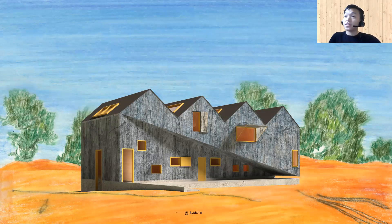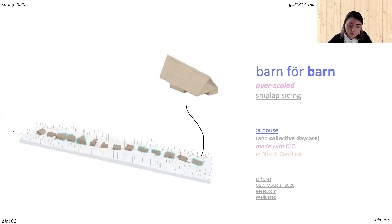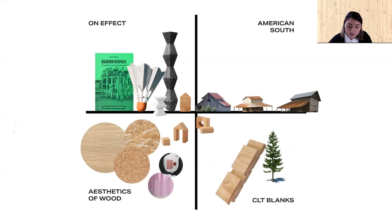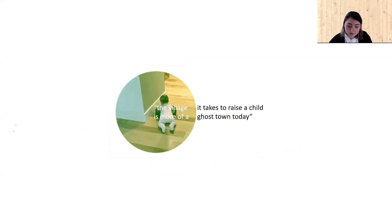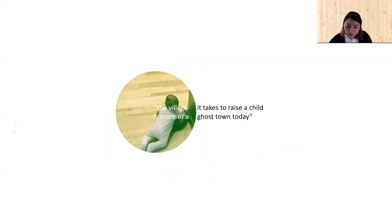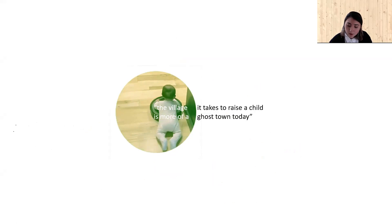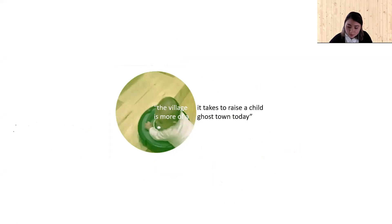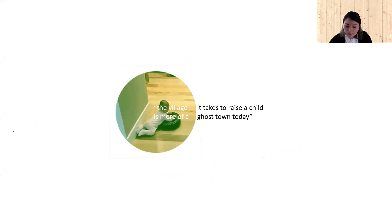Hello everyone, I'm Elif from Istanbul, Turkey, and the title of this project is Barn for Barn. This is an overview of where my interests lie at the intersection of the Scandinavian effect, the American South, aesthetics of wood, and CLT blanks. My journey into this semester began with the quote, 'the village it takes to raise a child is more of a ghost town today,' which is perhaps more pertinent now. And since our brief is a three-story, ten-person house, I wonder: can a house be the village it takes to raise a child?